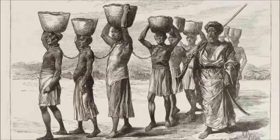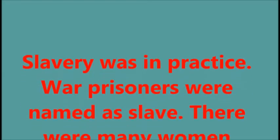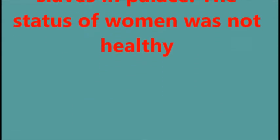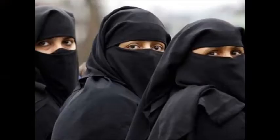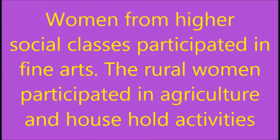Slavery was in practice during this period. Prisoners of war were made slaves. There were many women slaves in the palace. The status of women was not healthy — the purdah system and child marriage were in practice. Women from higher social classes participated in fine arts, while rural women participated in agriculture and household activities.